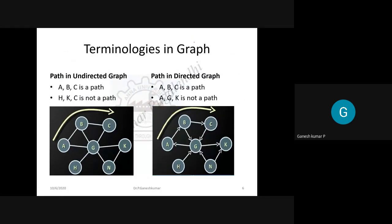An important graph terminology is path. A path is a line connecting all the edges along a line of travel. So if A, B, C are connected with one another by a line, that is a path. If there is no line between nodes H, K, and C, then it is not a path. In a directed graph, the path must follow the direction of the arrows — all arrows must be in the same direction of travel.